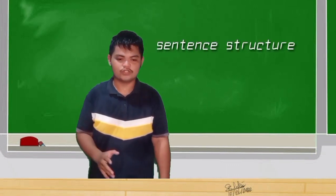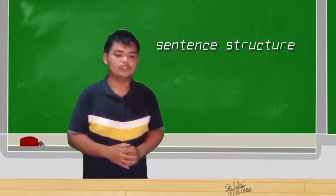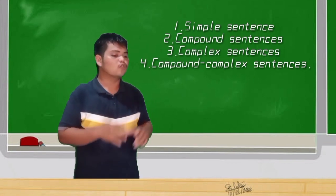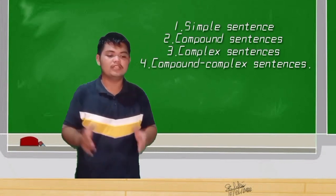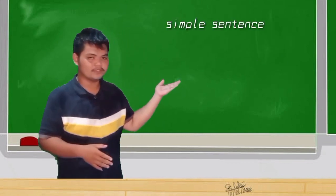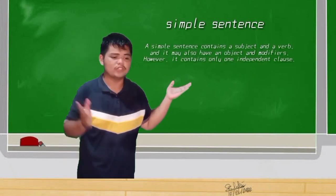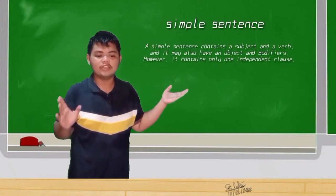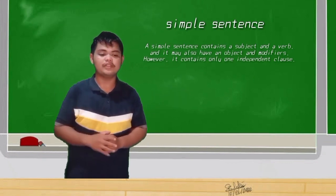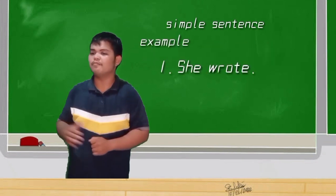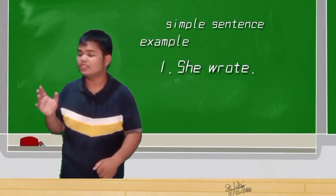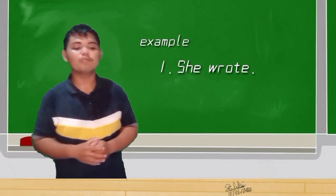There are four types of sentence structure: simple sentence, compound sentence, complex sentence, and compound-complex sentence. First, what is a simple sentence? A simple sentence contains a subject and a verb. It may also have an object and modifiers; however, it contains only one independent clause. For example: 'She wrote' — the subject is 'she' and the verb is 'wrote.' Second example: 'She completed her literature review' — subject is 'she,' verb is 'completed.'